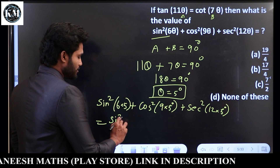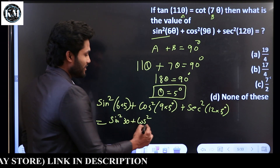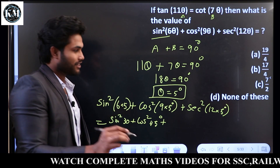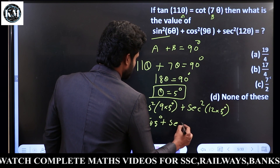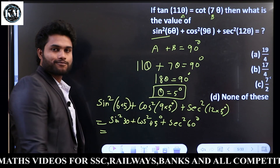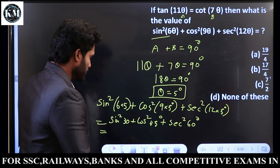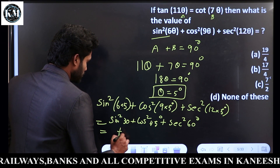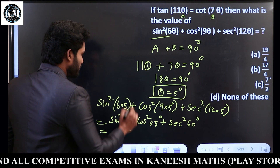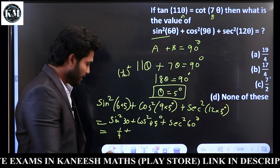Sin² 30 — Sin 30 is 1 by 2, squared is 1 by 4. Cos² 45 — Cos 45 is 1 by root 2, squared is 1 by 2. Sec² 60 — Sec 60 is 2, squared is 4.